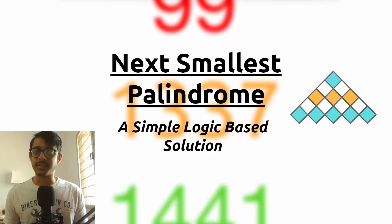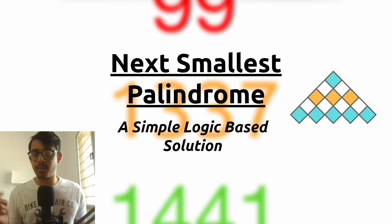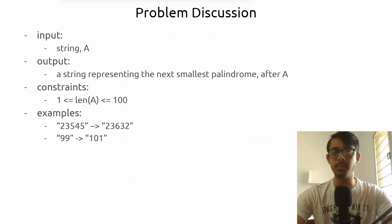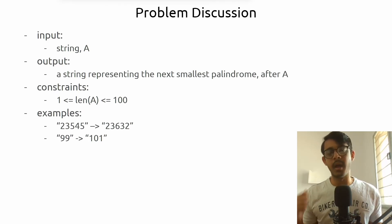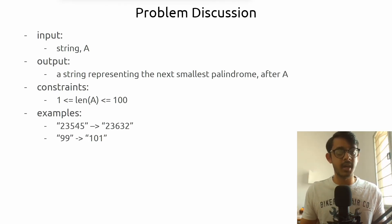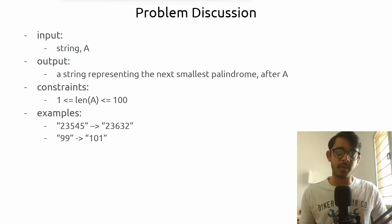Hello everybody, welcome back. Let's talk about the problem: next smallest palindrome. This is one of those questions absolutely loaded with edge cases, but I'm going to explain a simple logical solution. We're given the input as a string called A, and the goal is to output a string representing the next smallest palindrome after it. For example, 23545 becomes 23632, and after 99 the answer is 101.